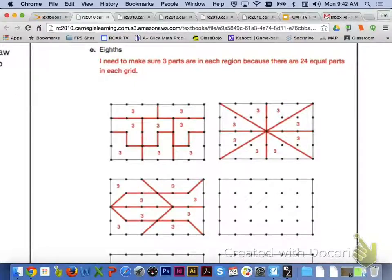Letter E, eighths, you need to make sure you have three parts in each region because there are 24 equal parts in each grid.